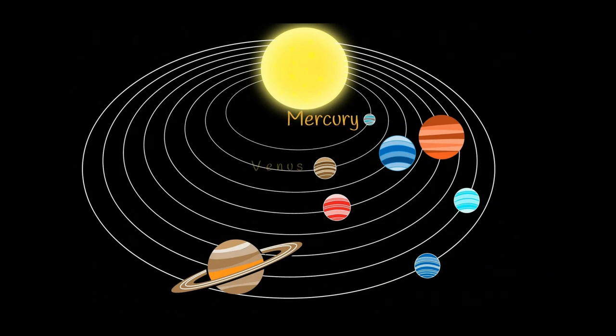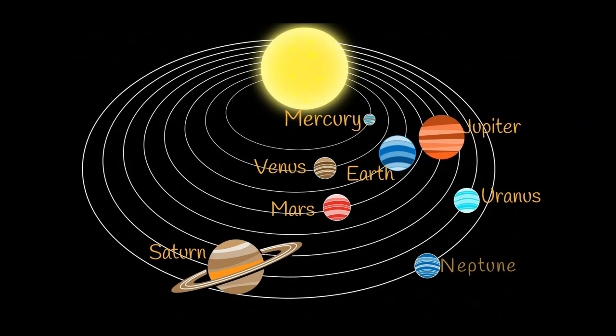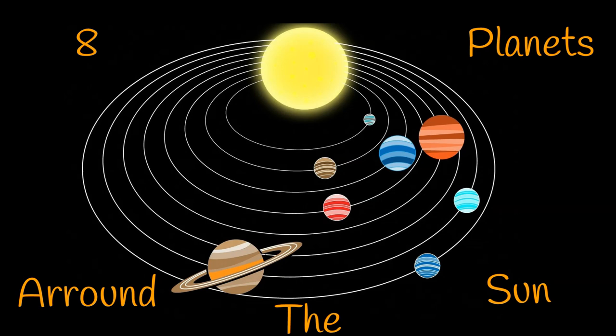Mercury, Venus, Earth, Mars, Jupiter, Saturn, Uranus, Neptune. Eight planets around the Sun.